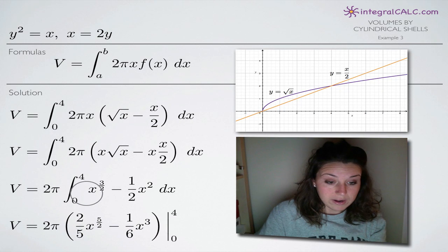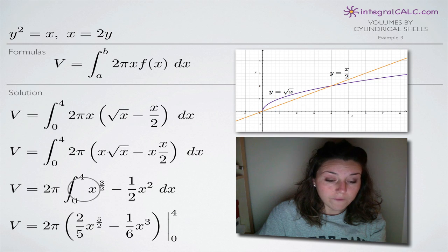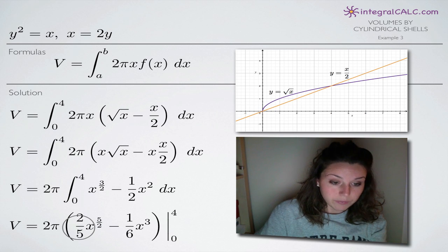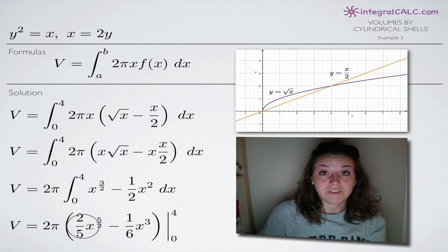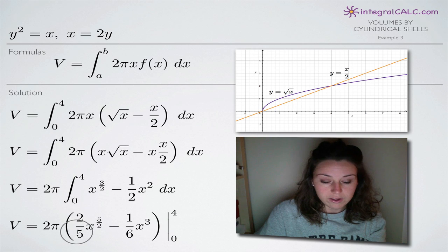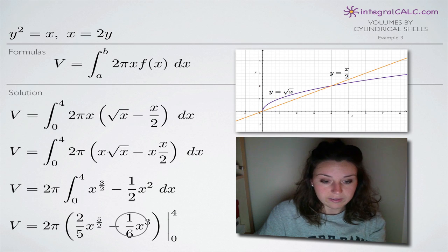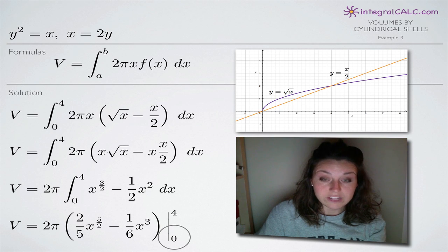Now we integrate. For x to the 3/2, we add 1 to the exponent to get 5/2, then divide the coefficient (which is 1) by 5/2 — giving us 2/5. For the second term, we add 1 to the exponent to get 3, then divide the coefficient 1/2 by 3 — giving us 1/6. So our integrated expression is 2/5 times x to the 5/2 minus 1/6 times x cubed, evaluated from 0 to 4.